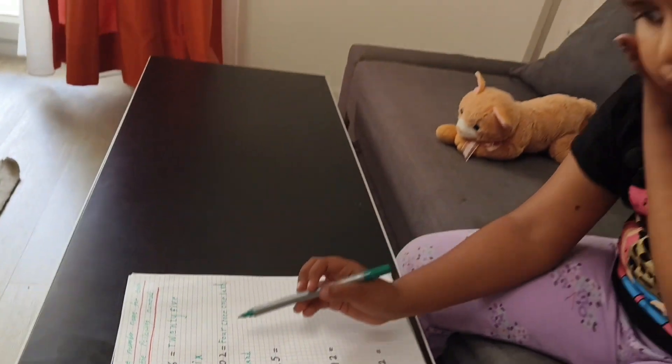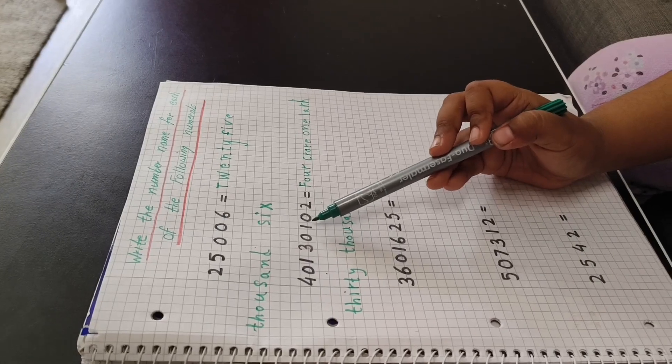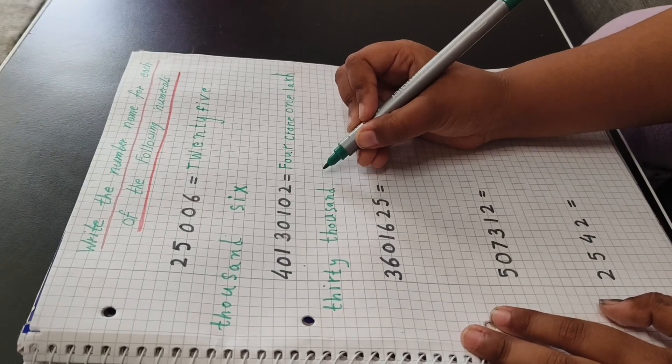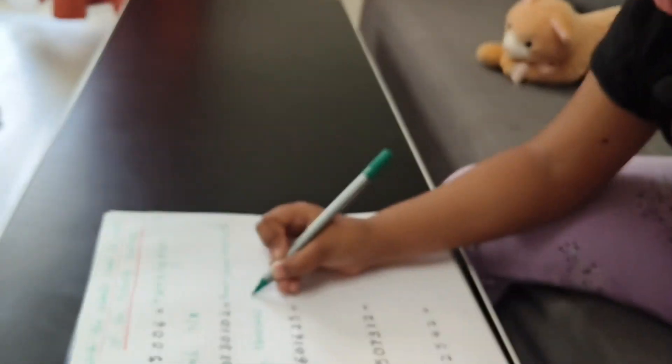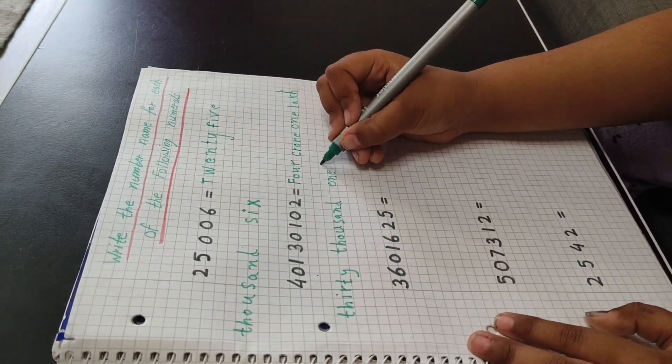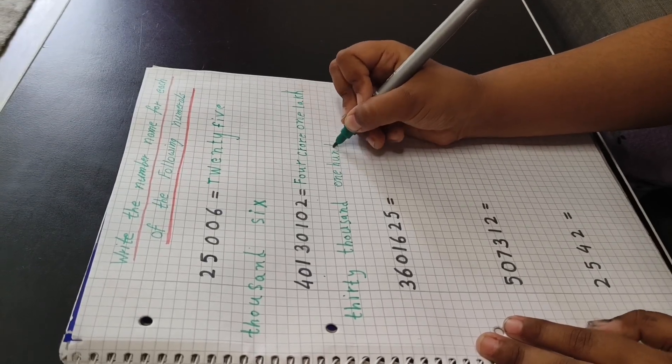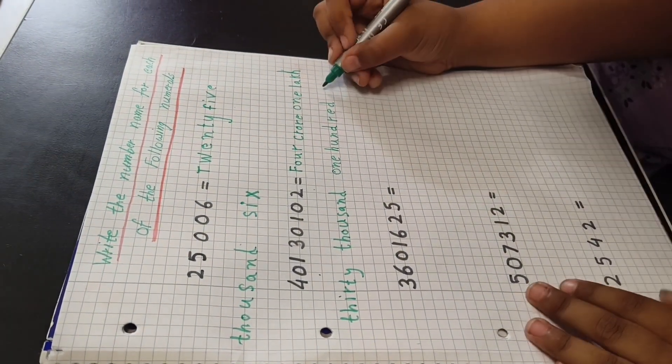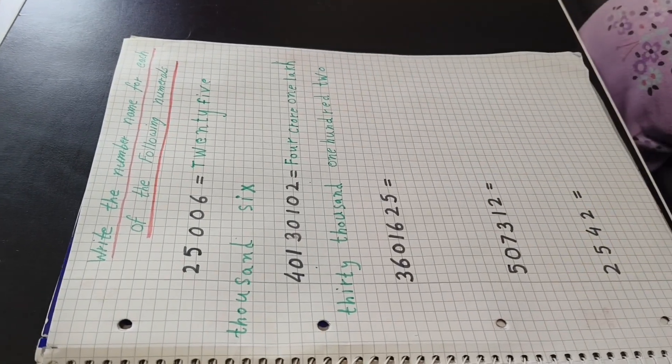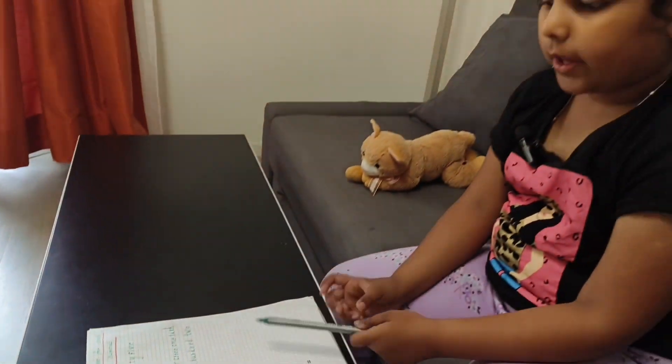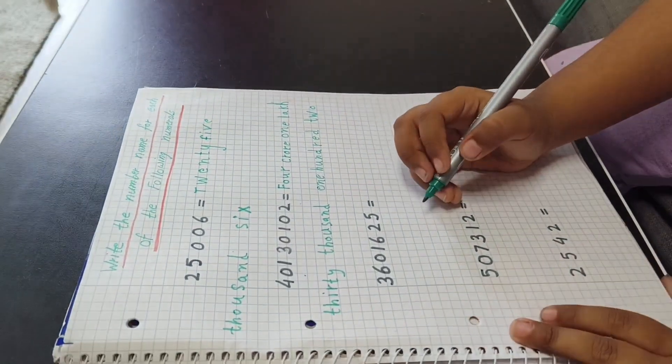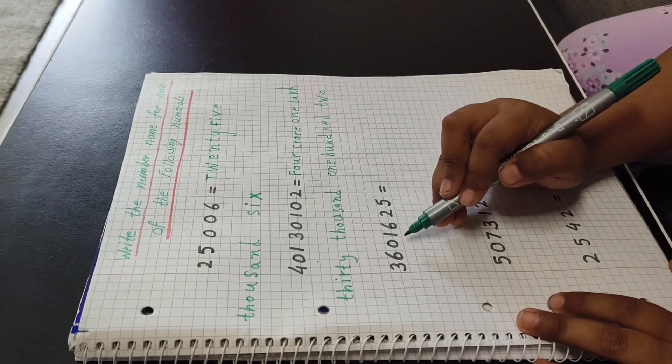Now I will count again. So ones, tens, hundreds. This is one hundred two. So I will write one hundred two. O-N-E, H-U-N-D-R-E-D, T-W-O. Now this is done. So this becomes 1 lakh 30 thousand 102.